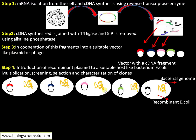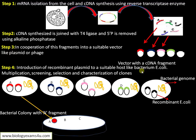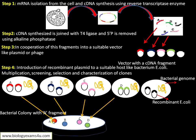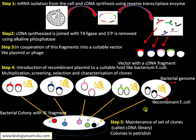Step 4: introducing this recombinant plasmid into a suitable host like bacterium, where it will multiply. We screen and characterize the clones. Now we have bacterium containing the specific cDNA A, B, C, D, E — recombinant E. coli with specific cDNA. This multiplies inside the host, and now we have a cDNA library with five genes A, B, C, D, E. Each colony contains a particular cDNA of this organism, and this set of maintained clones is referred to as a cDNA library.